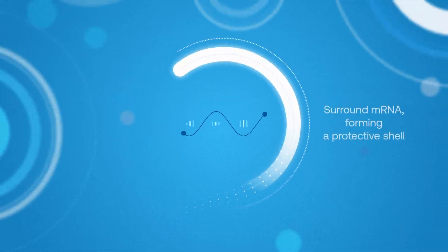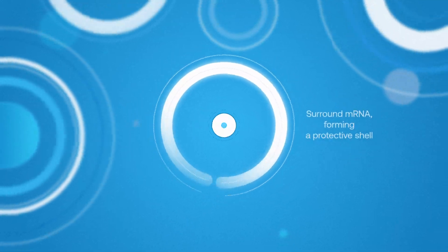They're called nano for a reason. They're just 100 nanometers across, one one-hundred-thousandth of a centimeter, and surround mRNA, forming a protective shell for their journey to our cells.